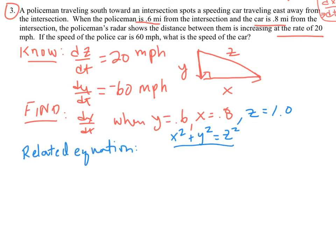My related equation then is going to be this: x squared plus y squared is equal to z squared. Notice that all of these quantities are changing. Previous example, one of them was fixed. So since all of them are changing, I differentiate, and they pretty much all turn out to be the same. 2x dx/dt plus 2y dy/dt is equal to 2z dz/dt.